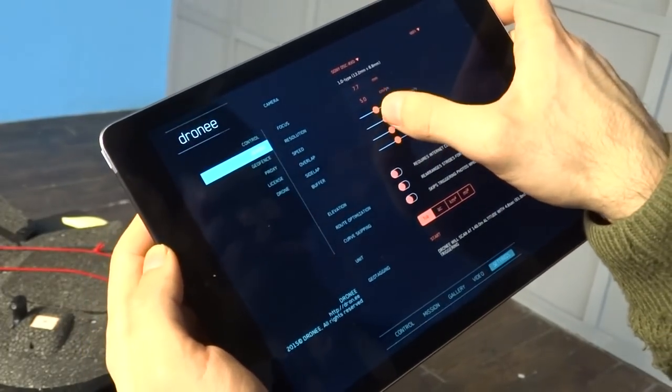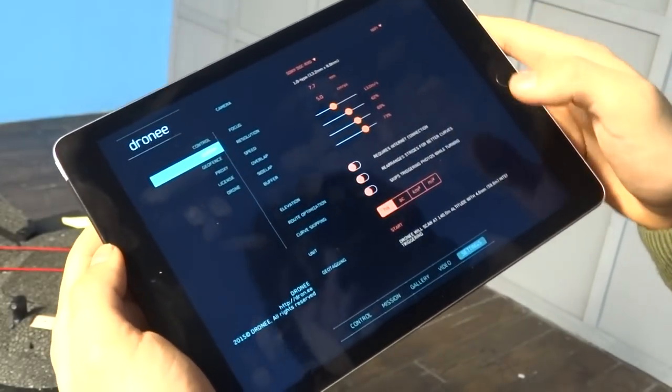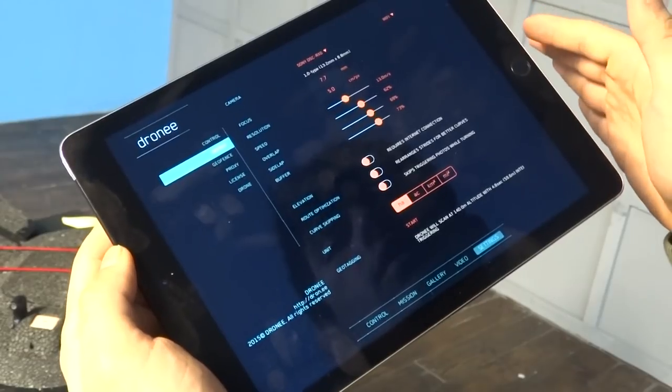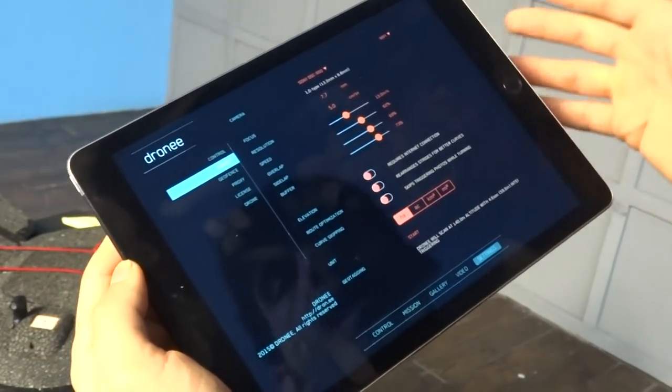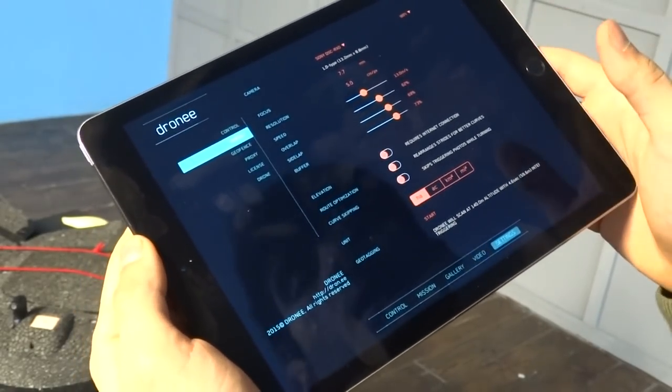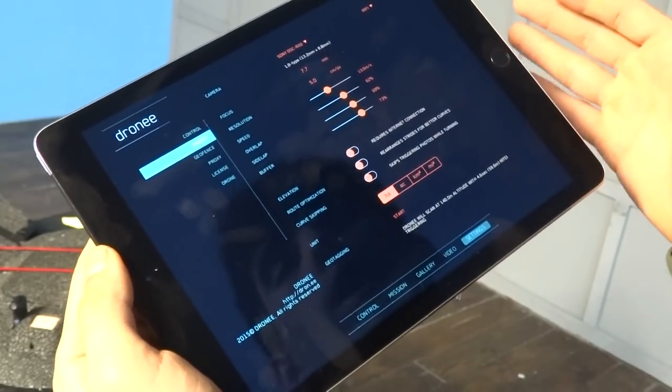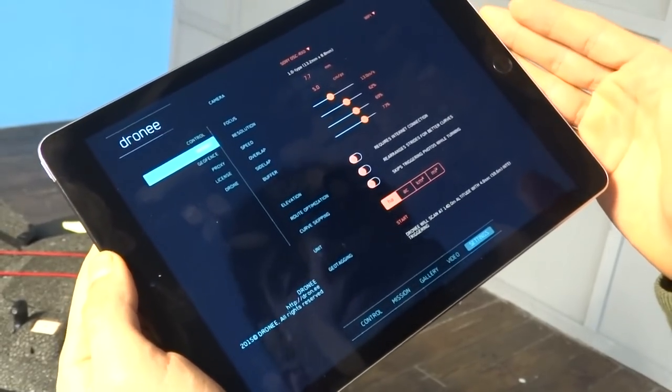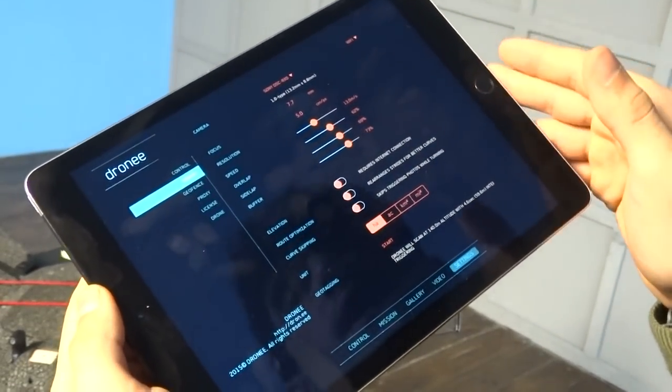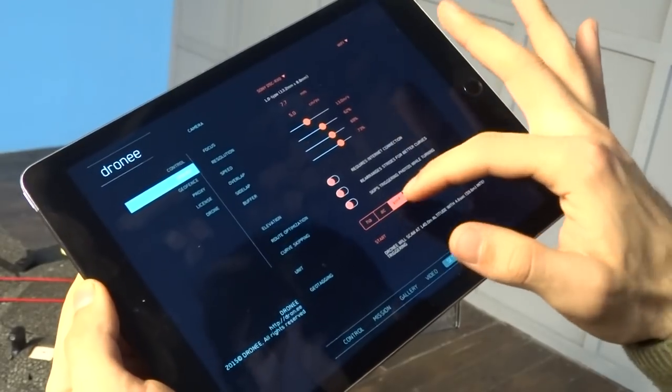You can change the overlap percentage by sliding and adjust the buffer zone. Here you have elevation. If the area is not horizontal, you can activate the elevation. It takes the elevation data from the internet and rearranges the flight for that elevation data. Route optimization is for wind conditions. When you activate it, it rearranges the flight grids to get less drift on the turns. Curve skipping skips triggering the camera on turns. In units, you can change different units to use in the app.